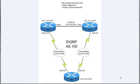Welcome back everybody, this is Joe Astorino, CCIE number 24347. In today's video we're going to be taking a look at the EIGRP stub routing feature. We're going to use this network diagram to first explain what the EIGRP stub feature is, and then we'll jump into the rack on real equipment and show you how to configure it.